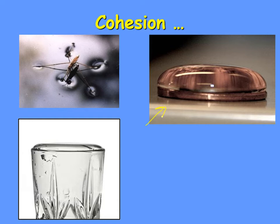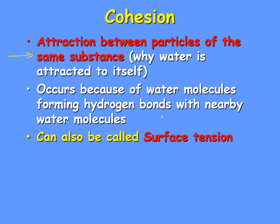We also talked about this bottom left picture — pouring a glass of water so high it's above the rim of the glass. That's because of cohesion, sometimes called surface tension. So your number one property of water is cohesion. This occurs because water molecules form hydrogen bonds with nearby water molecules.